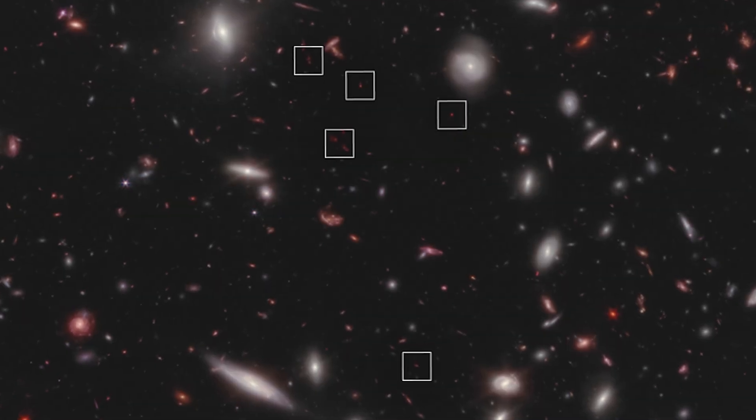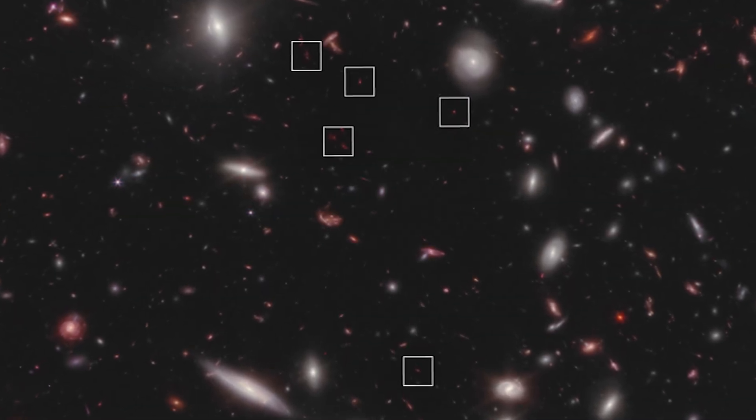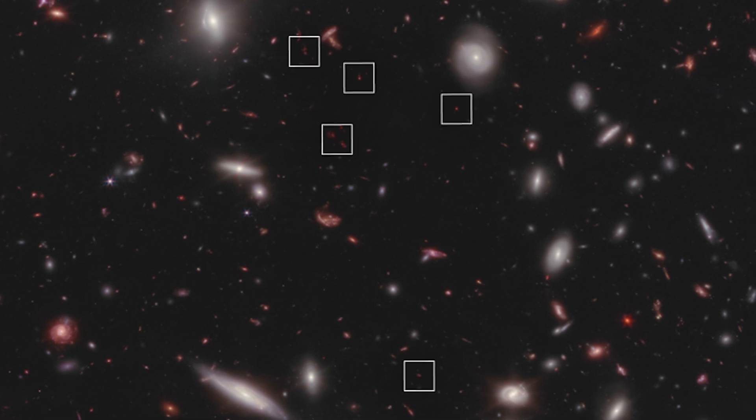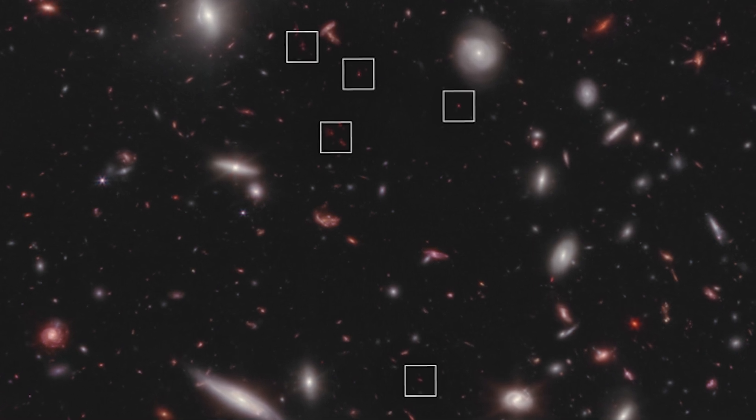According to theoretical physicist Michio Kaku, the discovery of ancient galaxies by the James Webb Space Telescope has called into question everything we knew about the beginning of the universe. Previously, these galaxies were thought to be less developed than the Milky Way, but the new findings suggest that we may be missing crucial information.